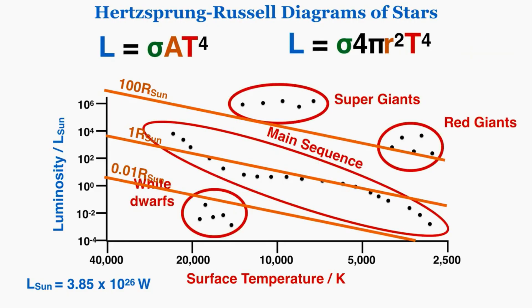That's how to read HR diagrams and use the luminosity equation to predict which stars will be physically larger than other stars.